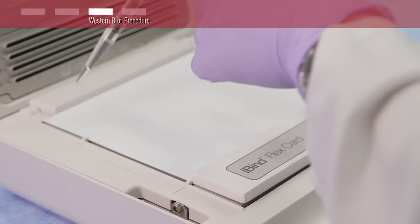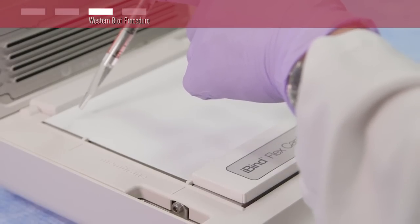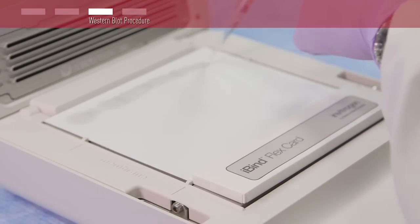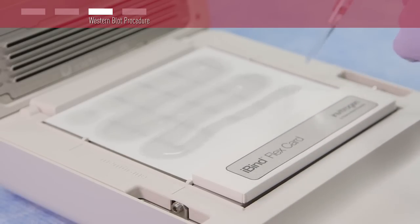Wet the card evenly with 10 milliliters of 1X iBind Flex solution. Alignment guides will show through the card once wet. Use these guides to ensure proper alignment of mini blots or vertically cut strip blots with their respective wells.